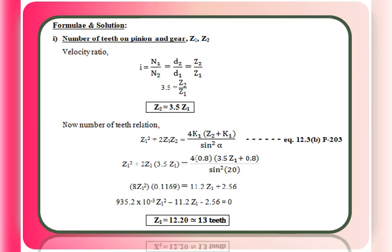By using the equation, velocity ratio i equals n₁/n₂, which equals d₂/d₁, which equals z₂/z₁. Considering the last term, i equals z₂/z₁. So i = 3.5 = z₂/z₁, or z₂ = 3.5 × z₁. We have one equation with two unknowns, so we need a minimum of two equations to solve for the two unknowns.